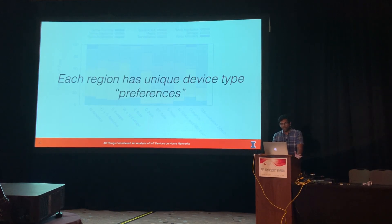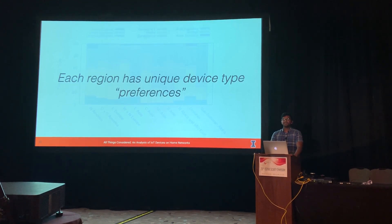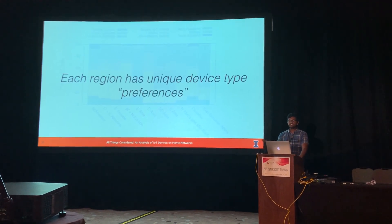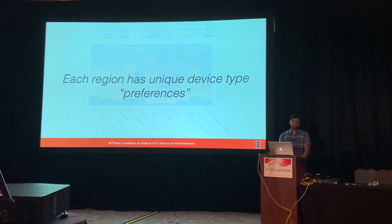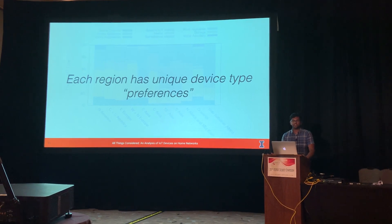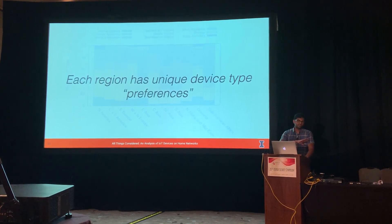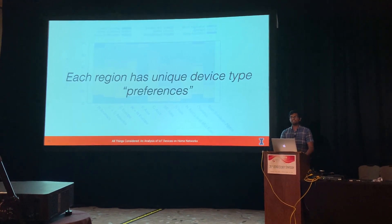There are fine-grained differences between regions — you can check out the paper for full detail. Broadly, each region has unique device type preferences, and the types of devices we find most popular vary depending on the region. We now know that IoT devices are distributed unevenly around the world and different regions have different device type preferences. The next question we looked at was: who is making these devices?